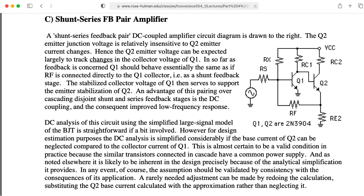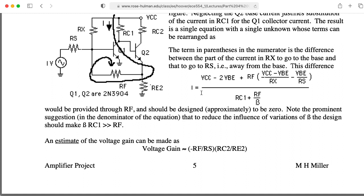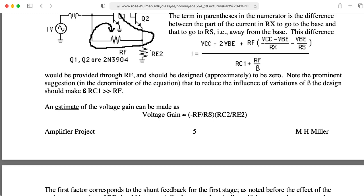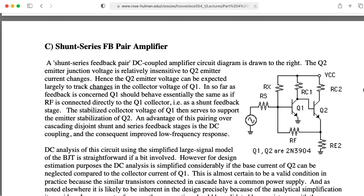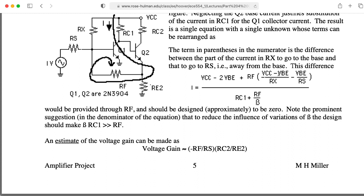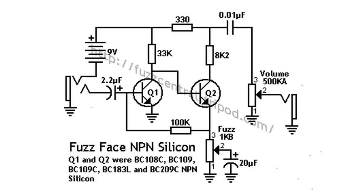An important detail about this kind of fuzz that I should mention is that this feedback structure essentially lowers the effective input impedance. It's generally expected that this circuit is going to interact with the output impedance of your pickup, and that's just part of the sound. This is actually a later version of the Fuzz Face that used NPN silicon transistors.